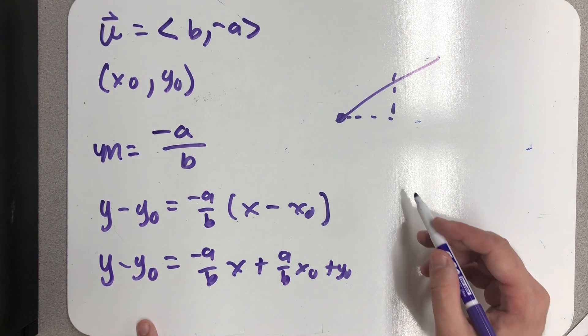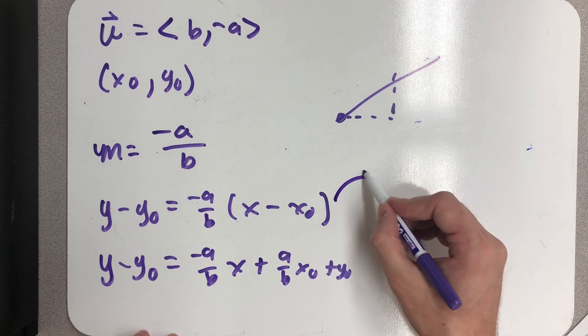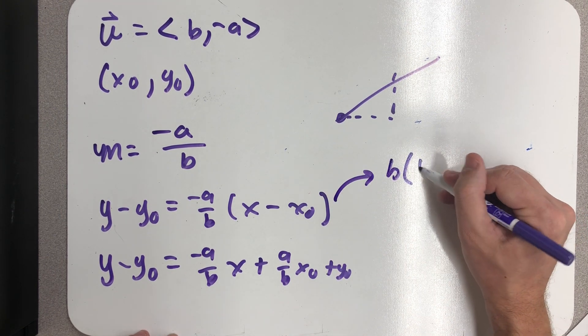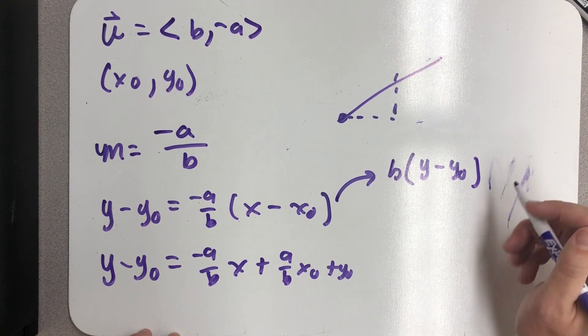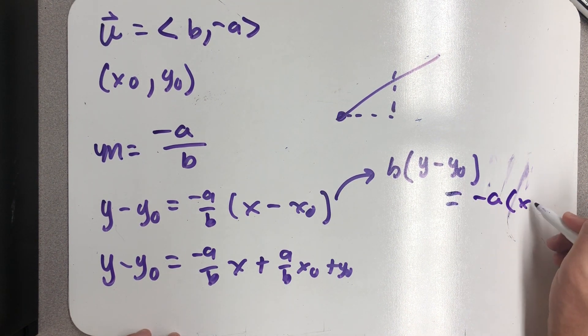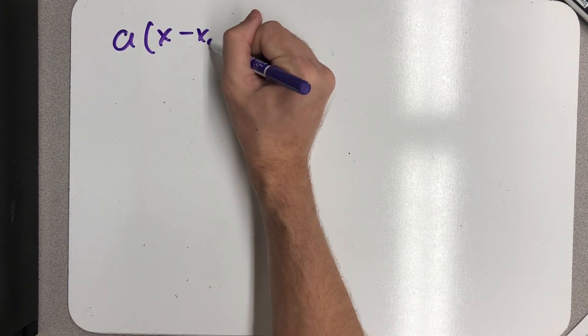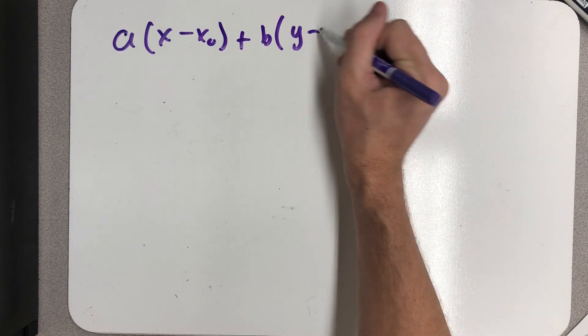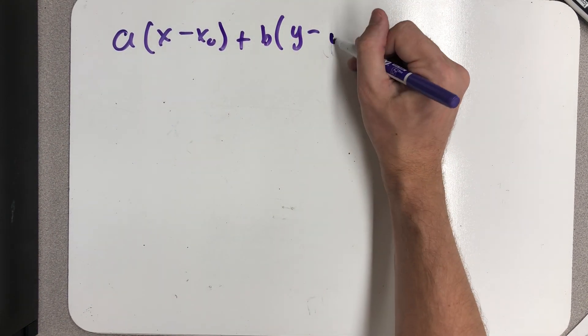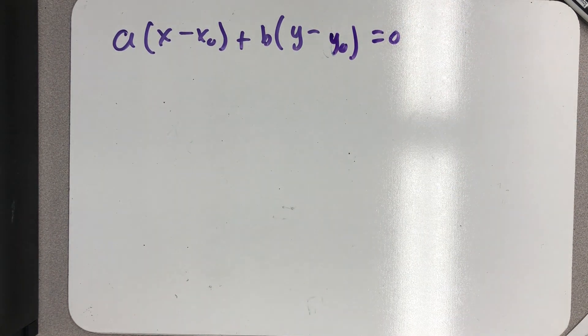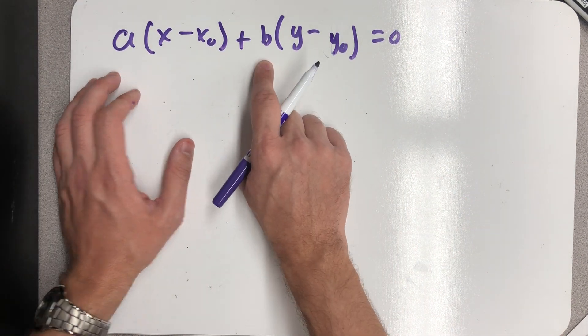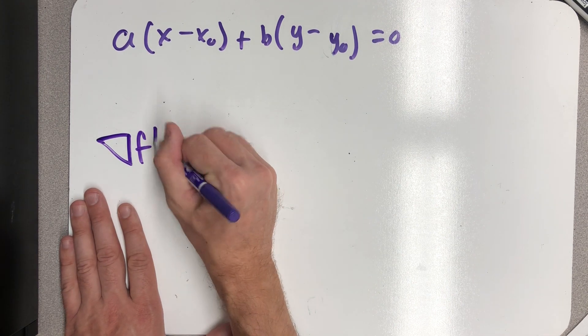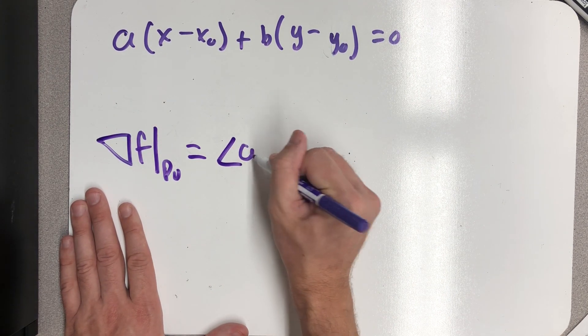But the really cool thing is that if I rewrite this equation a little bit, if I multiply both sides by b, I would get y - y₀ equals the opposite of a times x - x₀. And if I add everything to one side, I see what I would usually think of as the general equation of a line, but even better than that, this is just a and b. That's what I wrote down for del f at that point in question. It was the vector <a,b>.